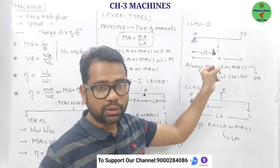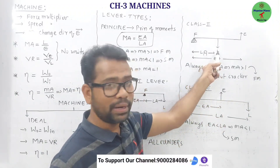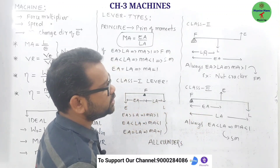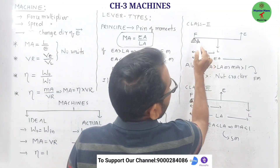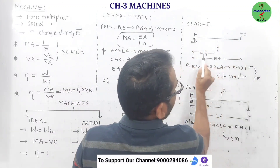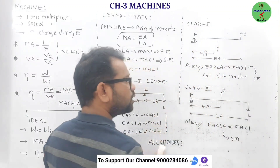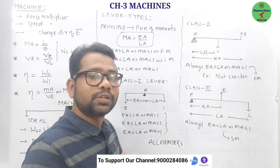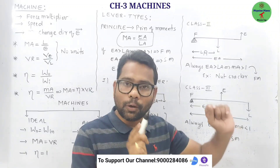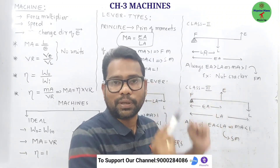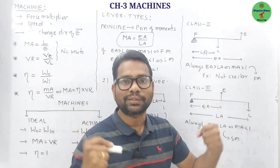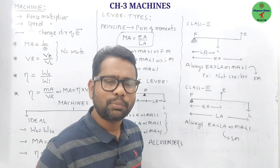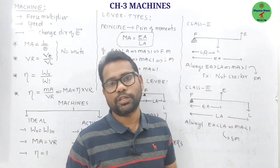In a class two lever, the load is in the middle, and the fulcrum and effort are on either side. For a class two lever, the effort arm is always greater than the load arm, which means the mechanical advantage is always greater than one. Therefore, class two levers always act as force multipliers. Examples include a nutcracker and a lemon squeezer.